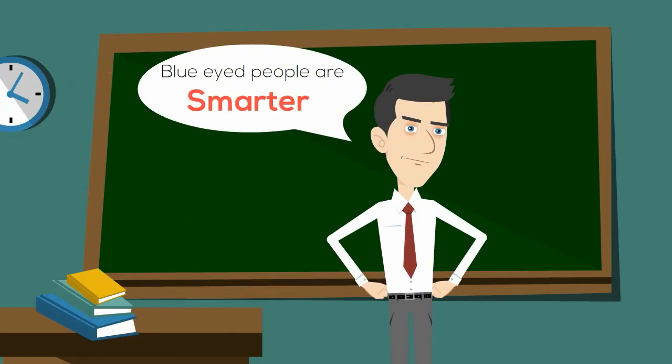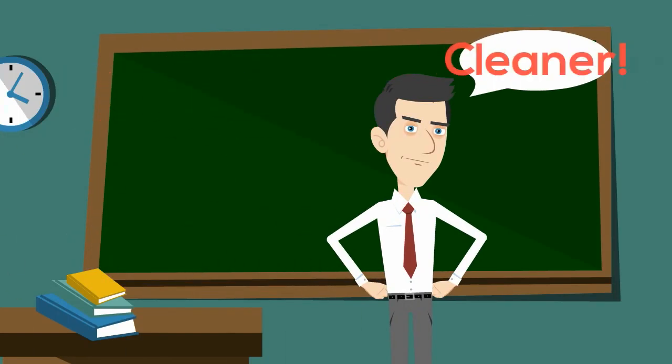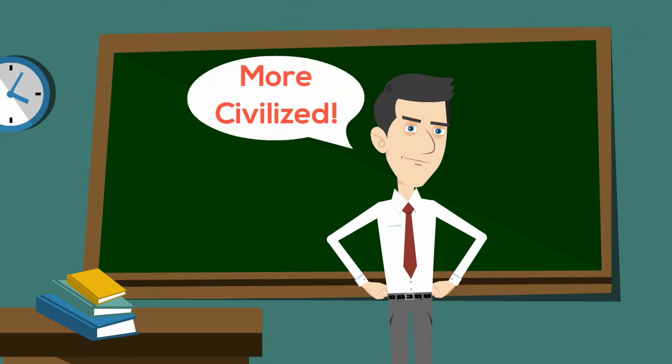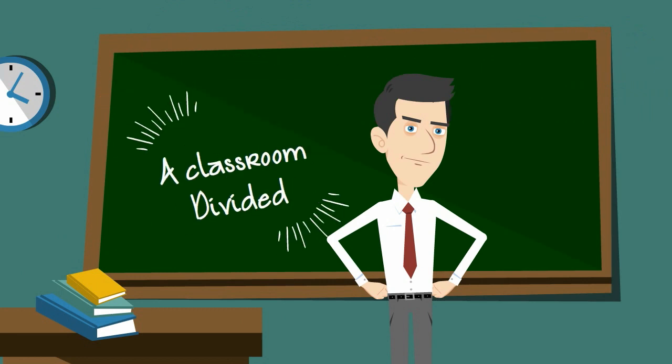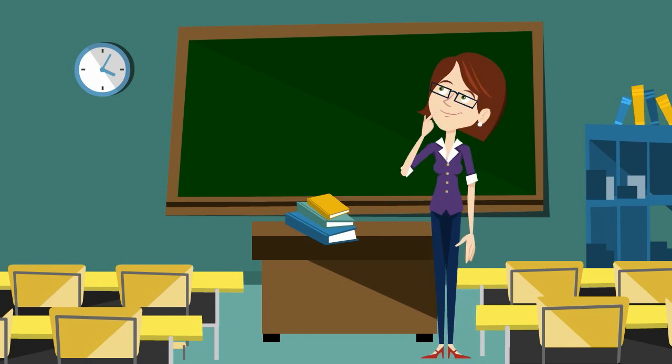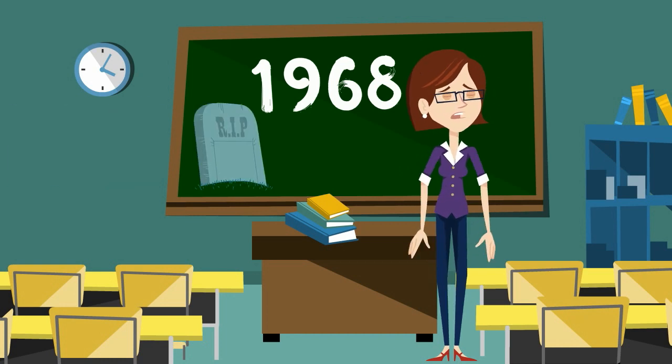Blue-eyed people are smarter than brown-eyed people. They are cleaner than brown-eyed people. They are more civilized than brown-eyed people. This is what a third grade teacher told her class. The year is 1968 and it's the day after Martin Luther King was killed.